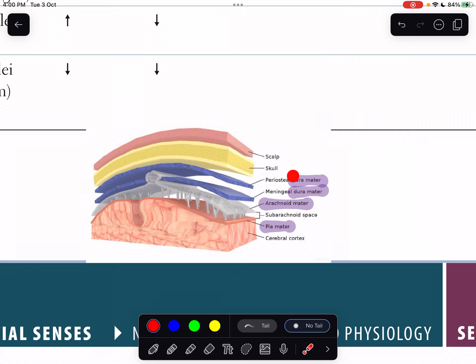This would be periosteal dura matter and this would be meningeal dura matter. So we have two dura matters, then we have arachnoid matter - this whitish grayish one - then pia matter. See how the arachnoid matter has these granulations? These are arachnoid granulations.